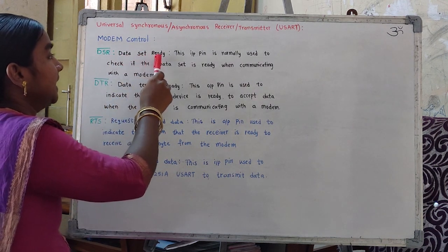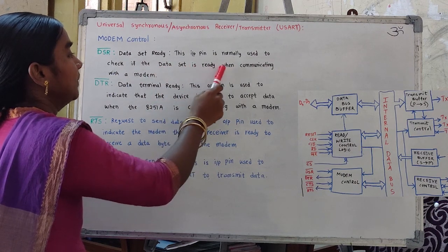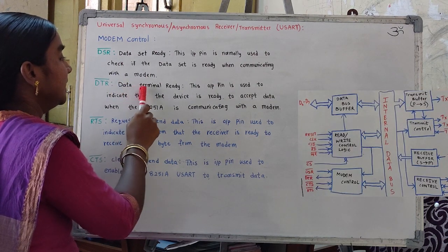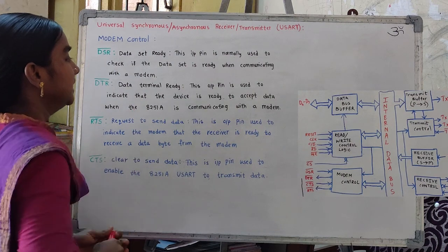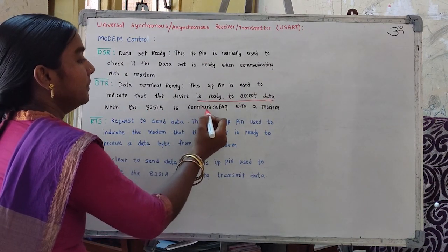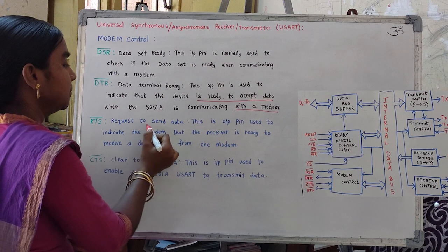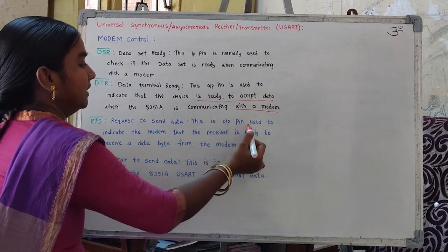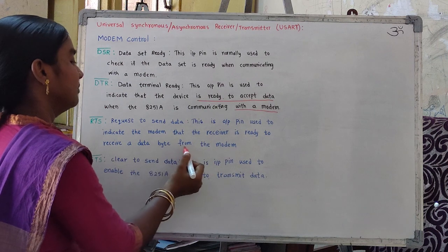DSR means data set ready. This input pin is normally used to check if the data set is ready when communicating with a modem. DTR means data terminal ready. This output pin is used to indicate that the device is ready to accept data when the 8251A is communicating with a modem. RTS means request to send. This output pin is used to indicate to the modem that the receiver is ready to receive a data byte.